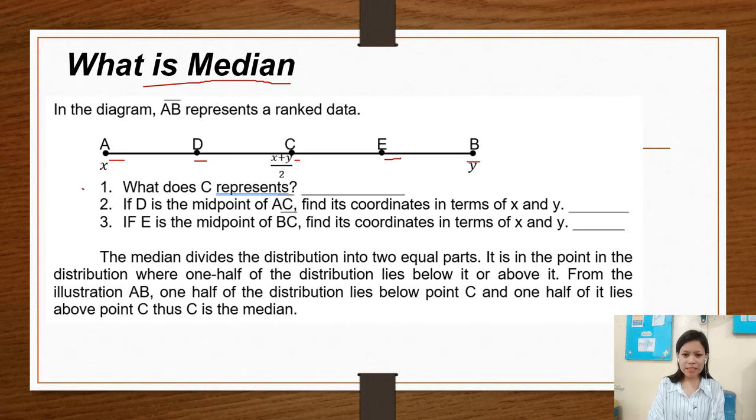Number one, what does C represent or the middle? Number two, if D is the midpoint of AC, find its coordinates in terms of x and y. Number three, if E is the midpoint of BC or line BC, find its coordinates in terms of x and y.